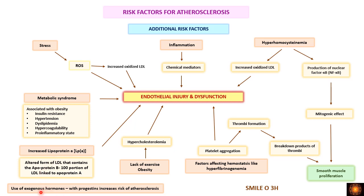Excess use of exogenous hormones with high progestin content also increases the risk of atherosclerosis. To remember the additional risk factors, use the mnemonic SMILE O3H: S for smoking, M for metabolic syndrome, I for inflammation, L for lipoprotein(a), E for exercise, O for obesity, and 3H for hemostasis/hyperfibrinogenemia, homocystinemia, and hormones.